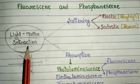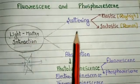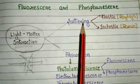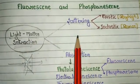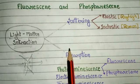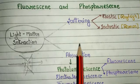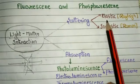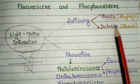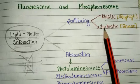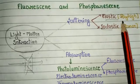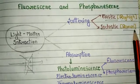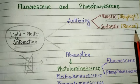When light-matter interaction occurs and scattering happens, two kinds of scattering occur. First is elastic scattering, and second is inelastic scattering. These are also called Rayleigh scattering and Raman scattering.